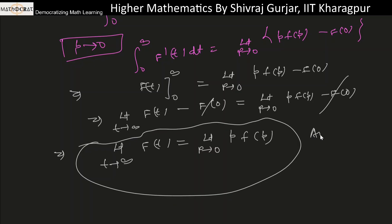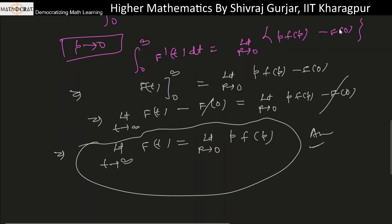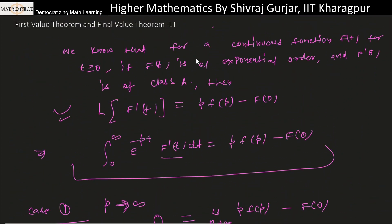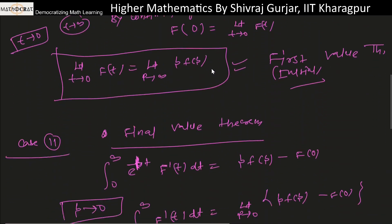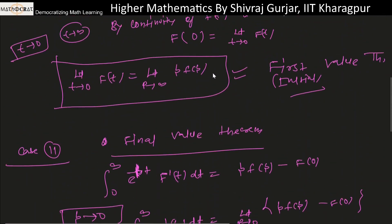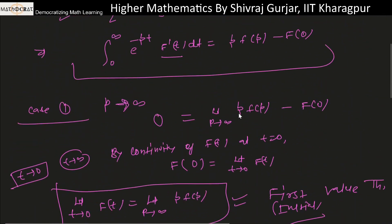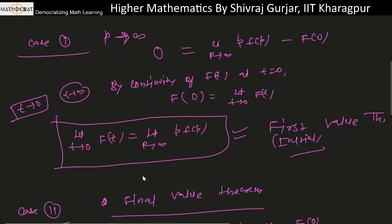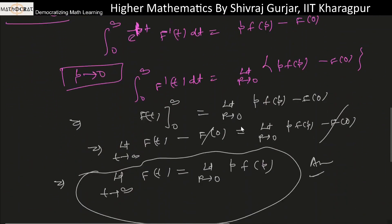This is the second value theorem, or final value theorem. The application will be in evaluation of integrals — cosine integral and similar forms. These are the two theorems; their execution can be assumed and used so that each result is verified to be true.